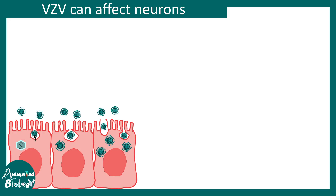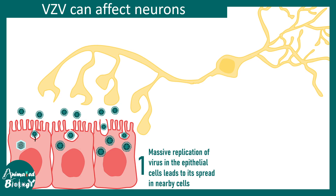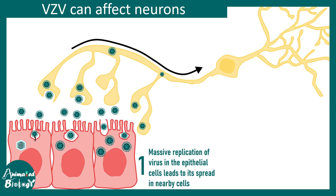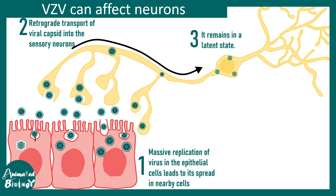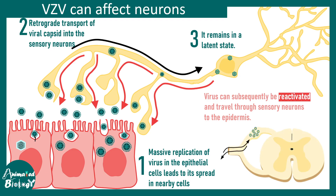Varicella zoster virus can also affect neurons. Specific nerve terminals ending in the skin get infected, and the virus moves retrogradely to the cell body, where it can stay dormant for years. Later, anterograde transport can occur, leading to reappearance of the disease in the form of shingles.